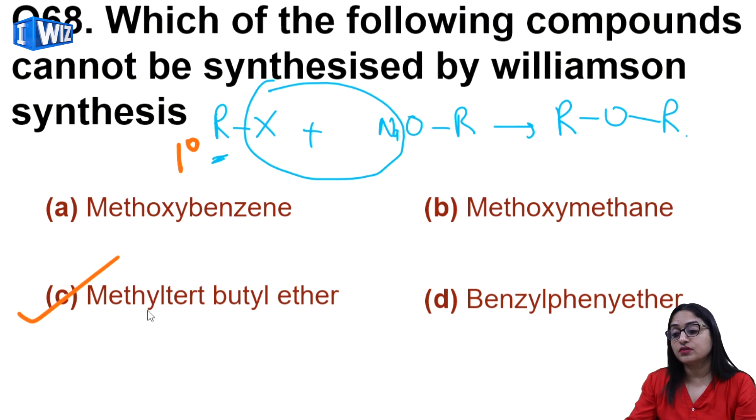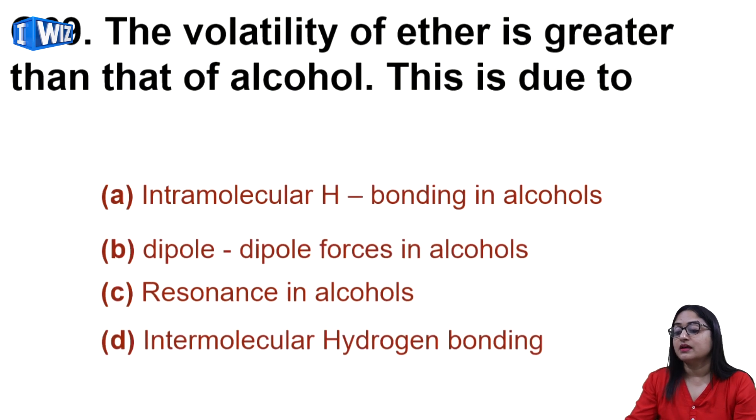Next is the volatility of ether is greater than that of alcohol - ether is more volatile and vaporizes quickly compared to alcohol. This is due to intermolecular hydrogen bonding. In alcohol, intermolecular hydrogen bonding occurs which increases its boiling point.